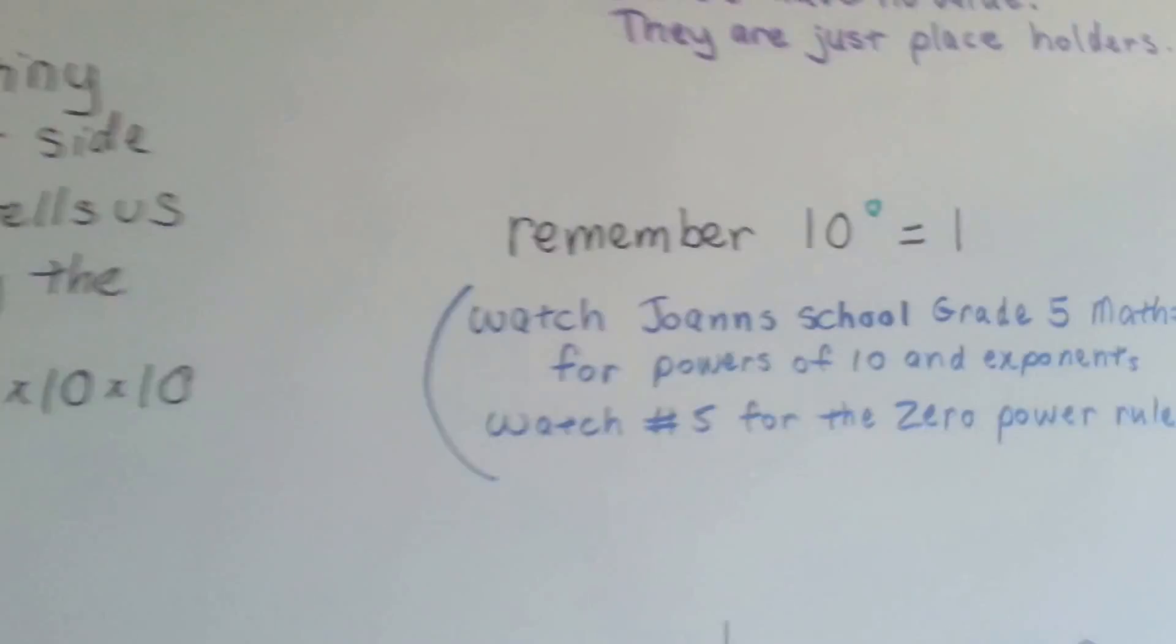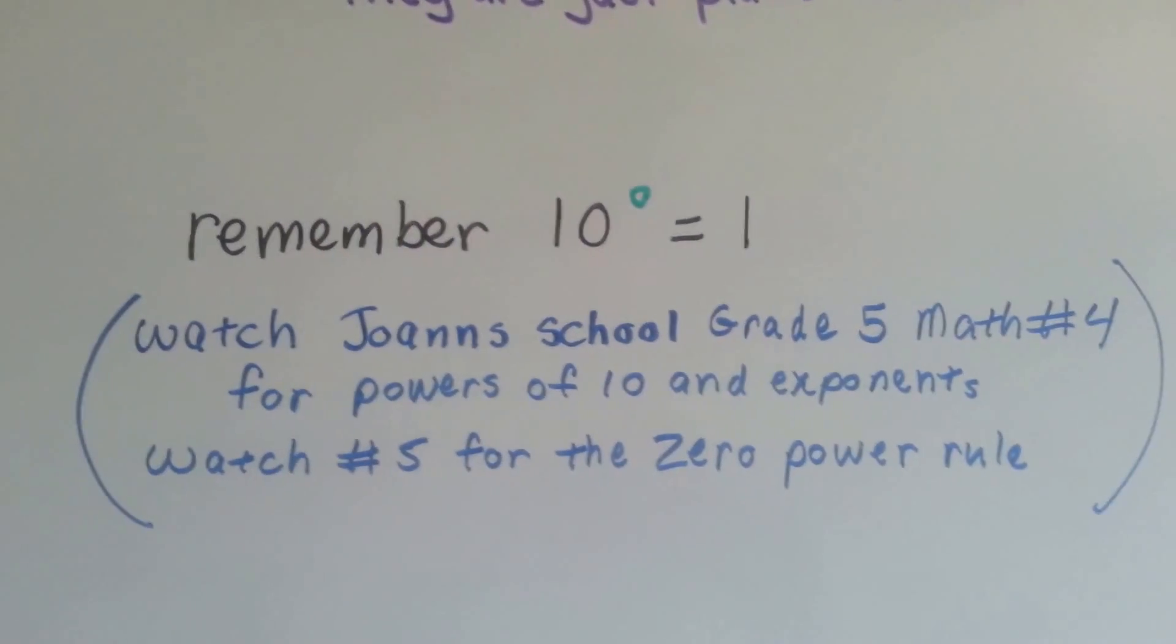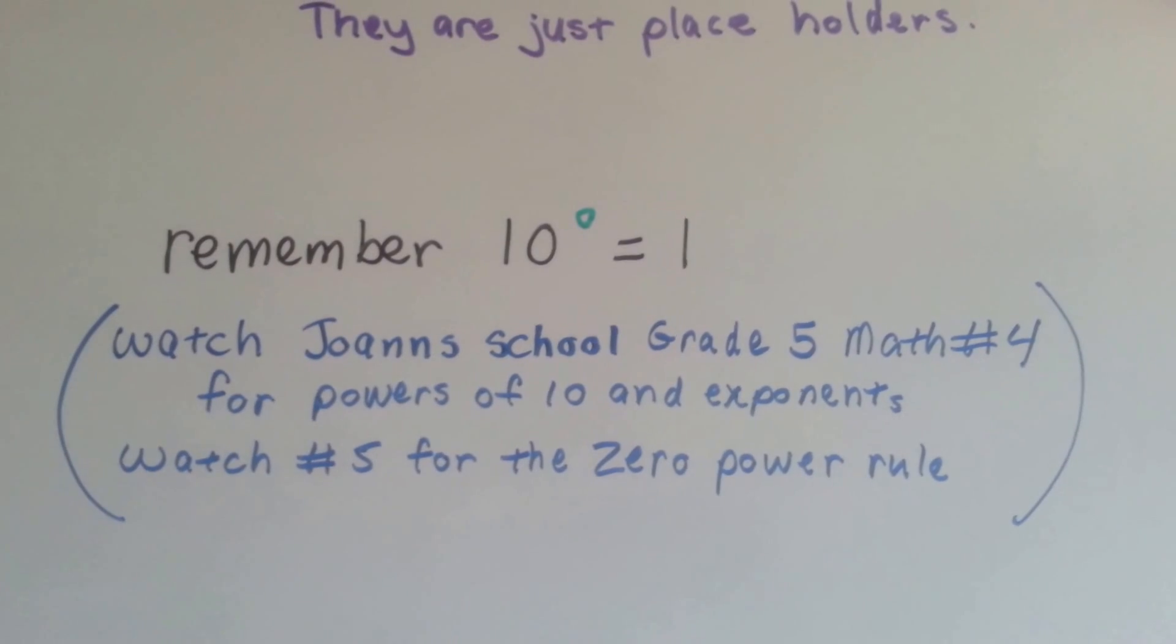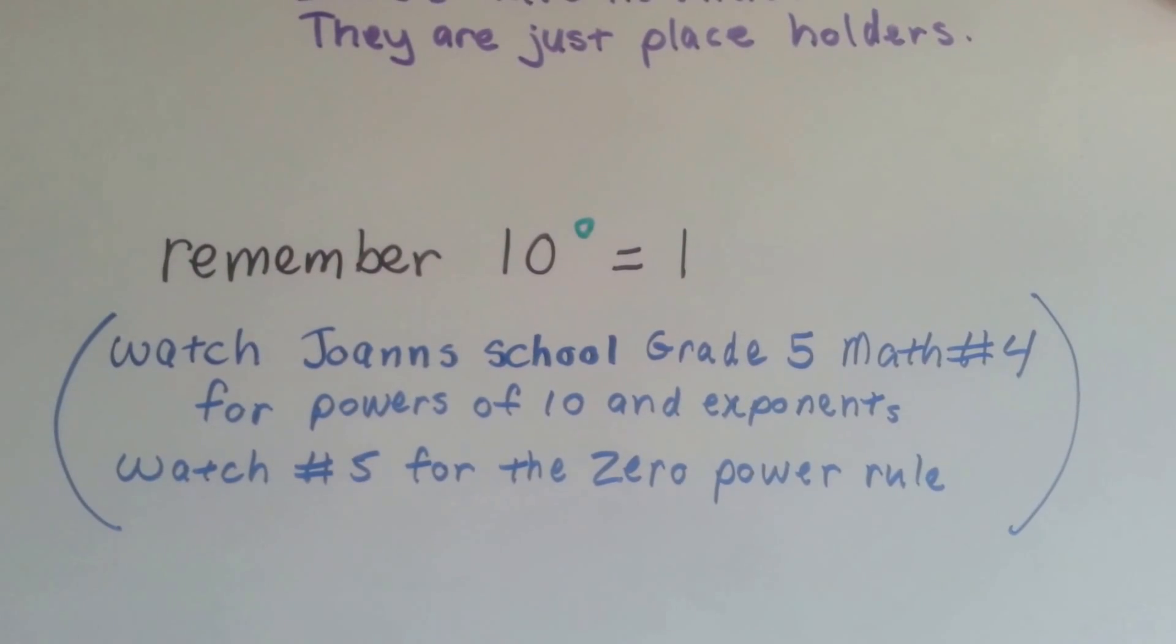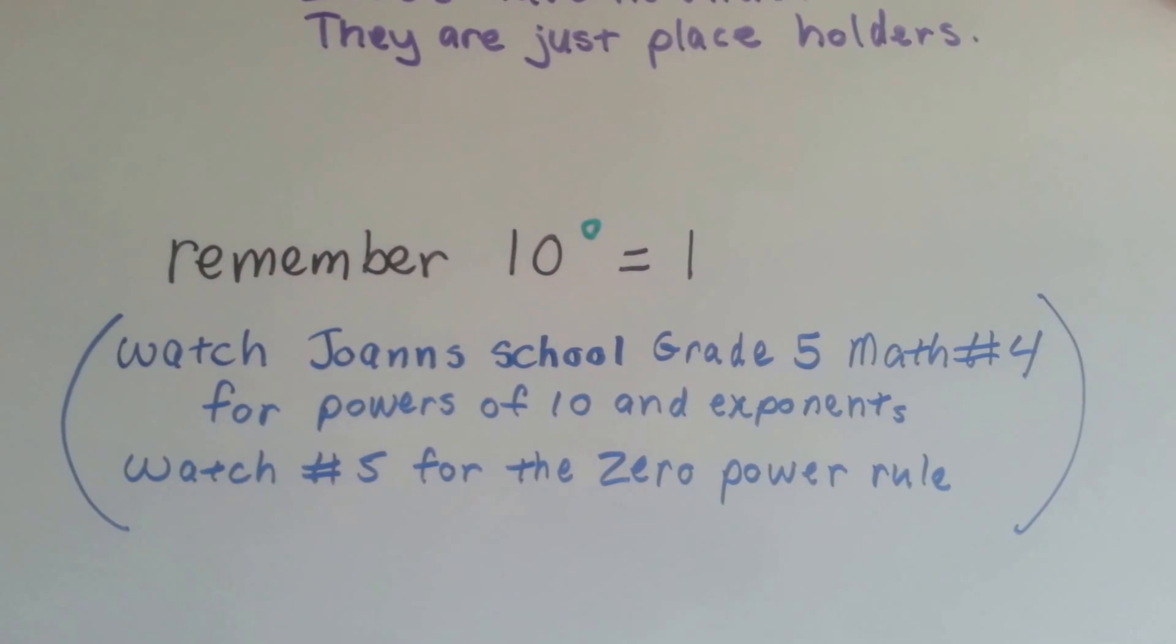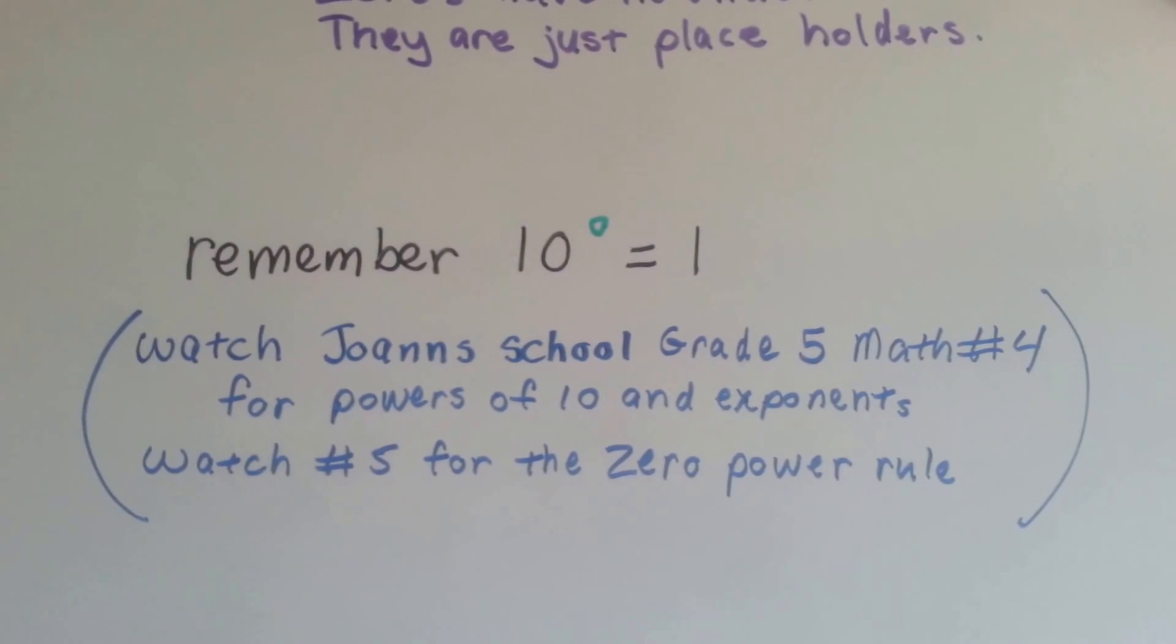So the other thing we need to remember is that 10 to the 0 power is equal to 1. Now if you don't understand any of this, you need to go back to the Grade 5 Math number 4 videos for powers of 10 and exponents, and if you watch the video number 5, it will fully explain the zero power rule and why it equals 1.